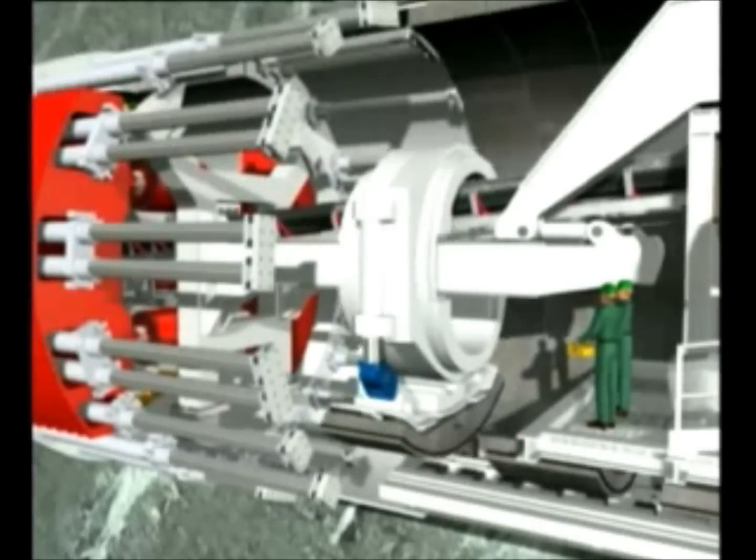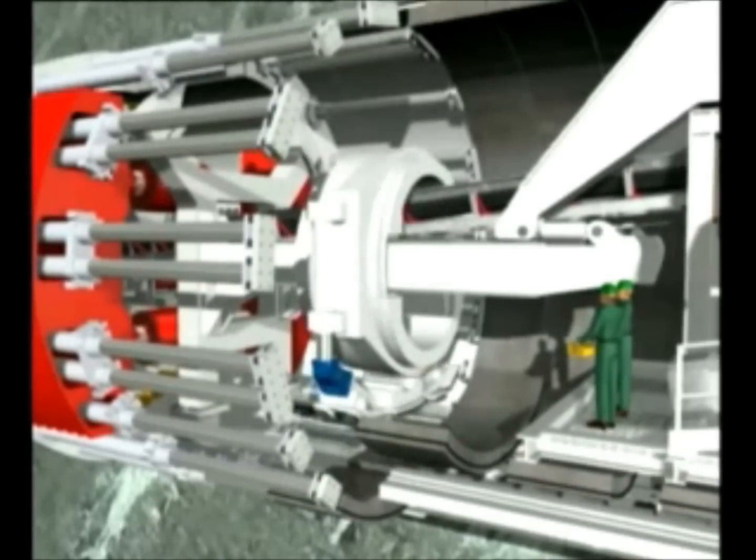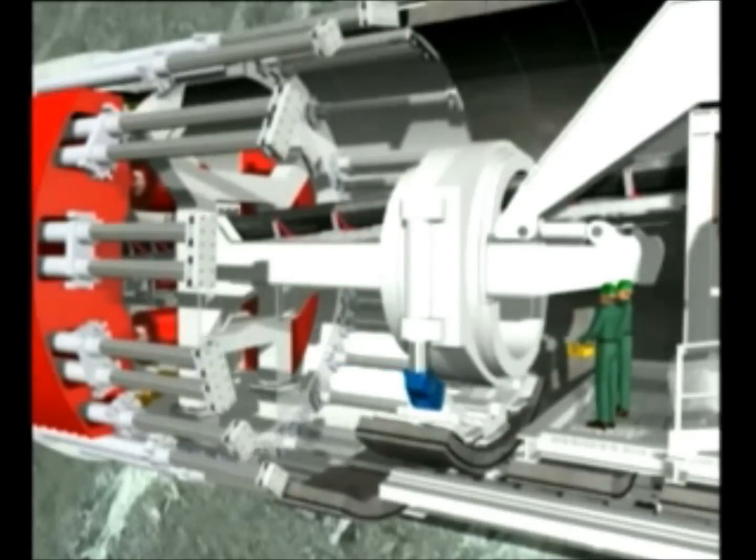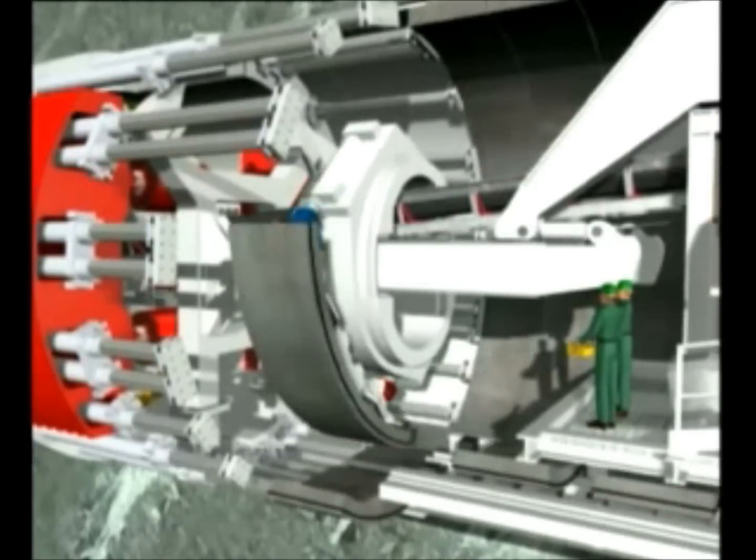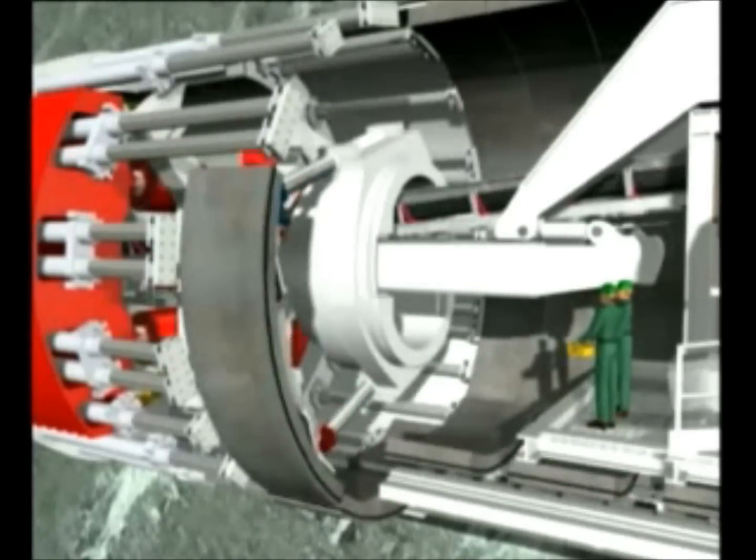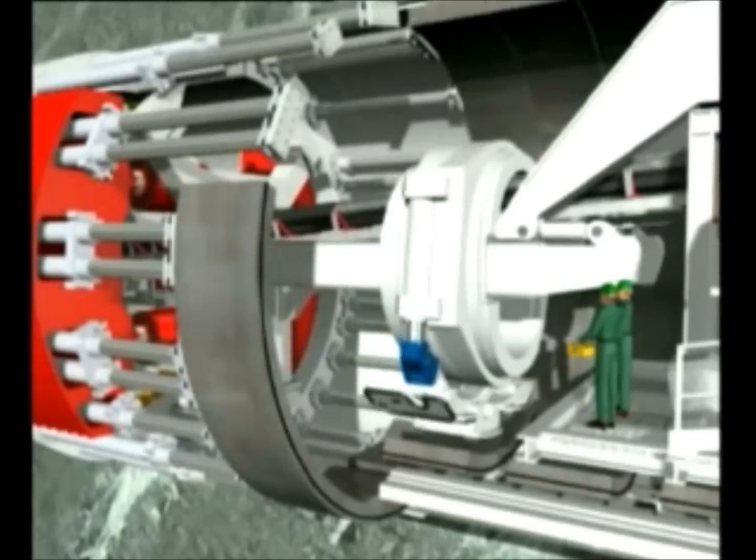The actual lining of the board tunnel is performed in the rear area of the shield. A complete tunnel ring consists of seven pre-finished reinforced concrete elements, so-called segments. Each segment is provided with a surrounding seal, which prevents the penetration of water into the tunnel.